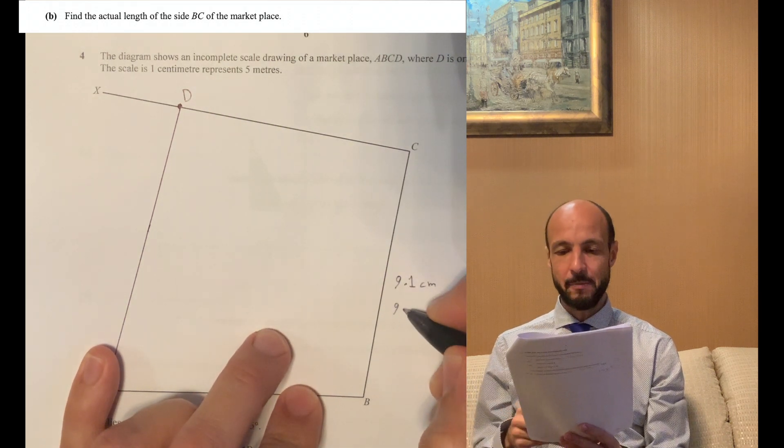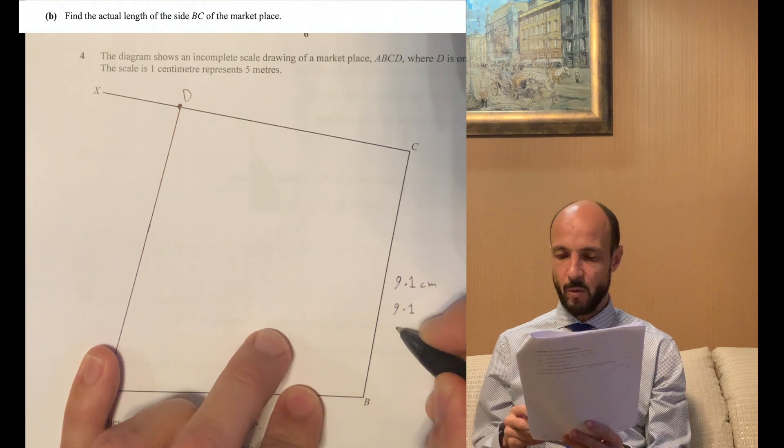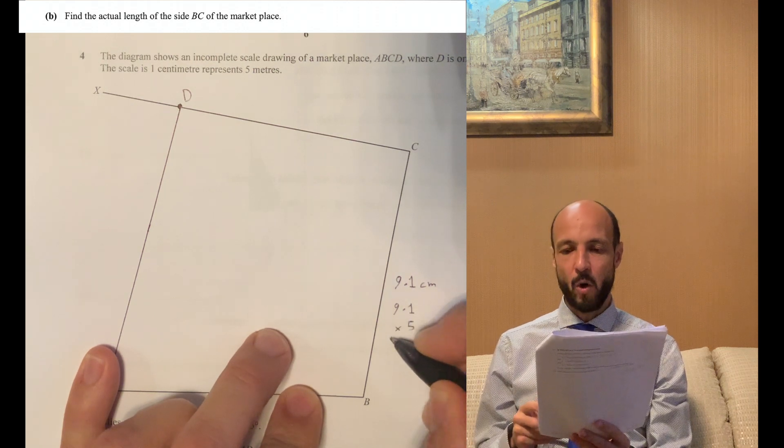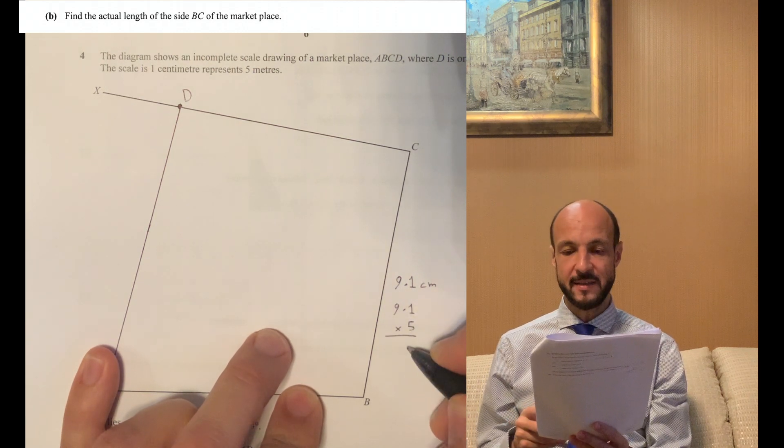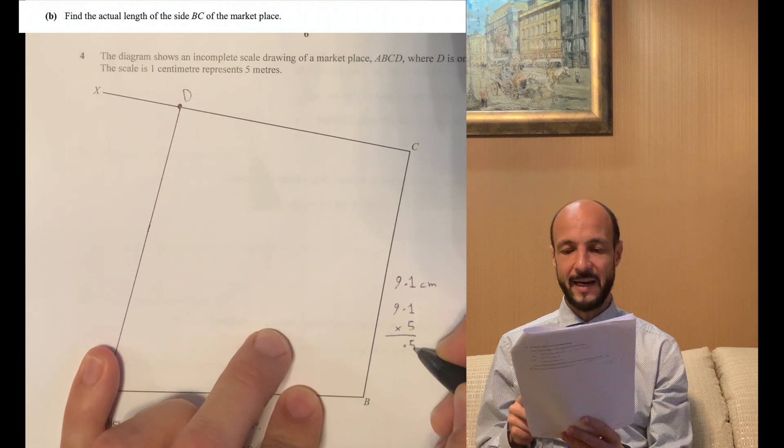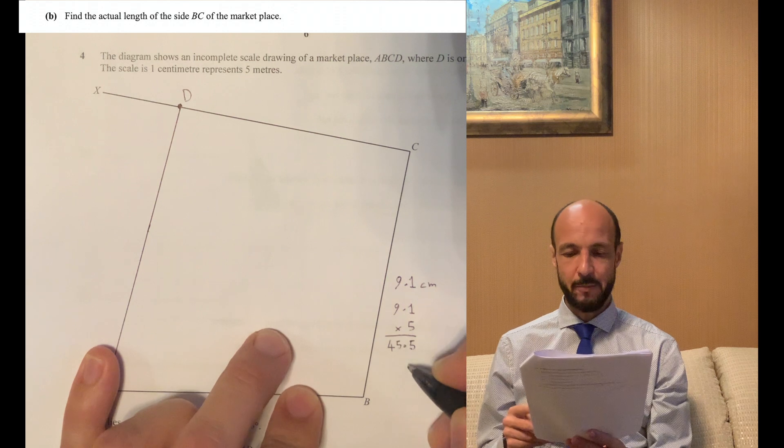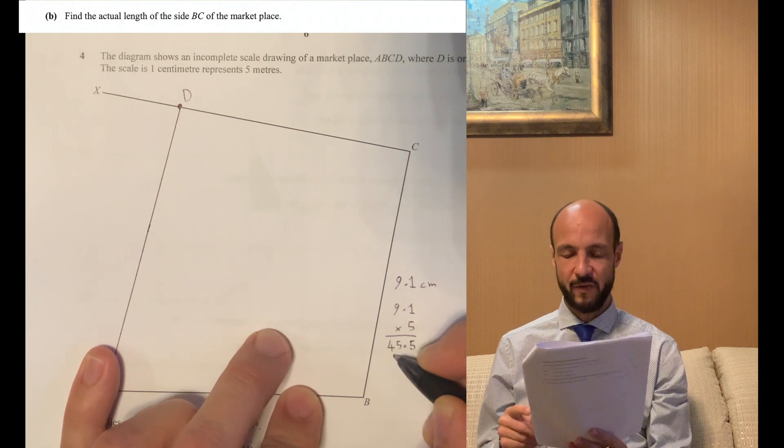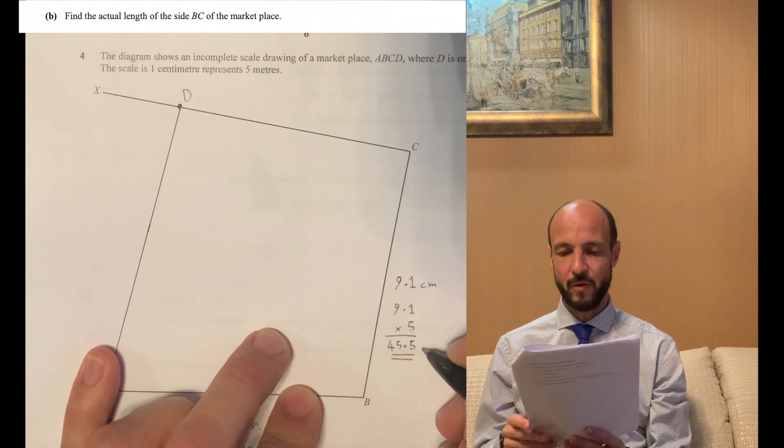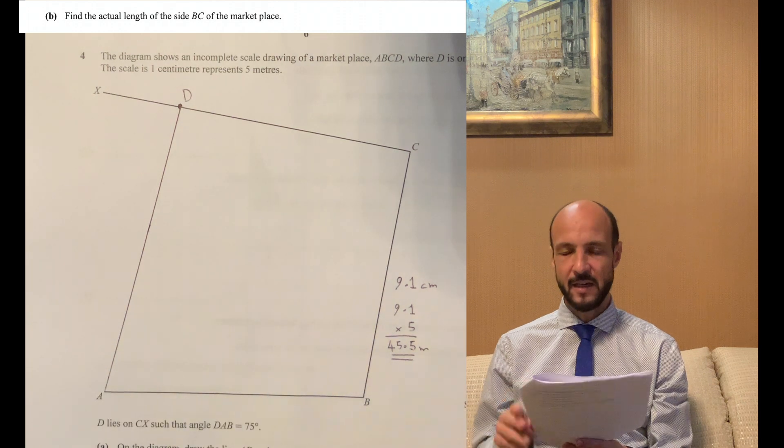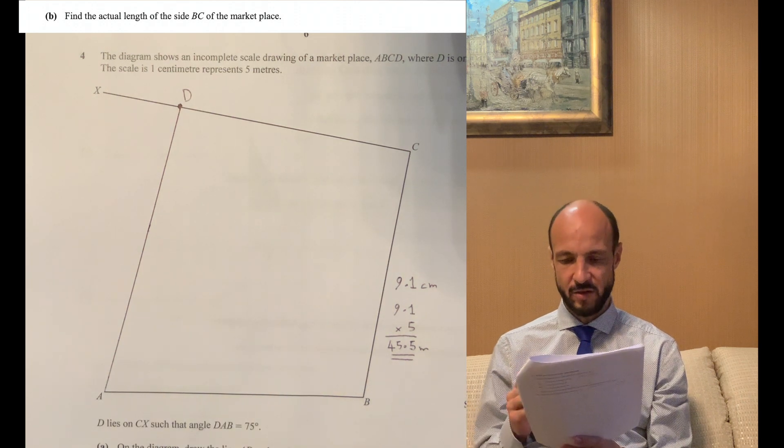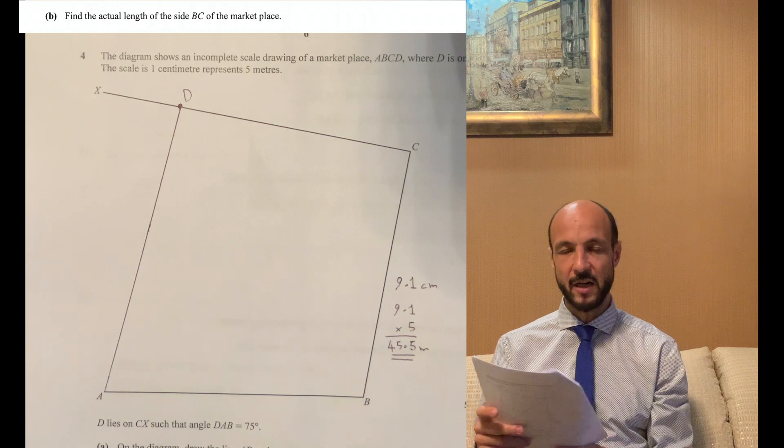On mine I've measured this as 9.1 centimeters, so we've been told a scale that 1 centimeter equals 5 meters, so I'm going to have to multiply my 9.1 by 5 and that will give me the answer in meters. 9.1 times 5 is 45.5, so I've given 45.5 meters as my answer. Yours might be slightly different but as long as you've measured it based on your printout you get the full marks.